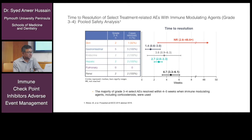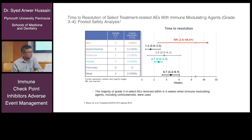Looking at the time to resolution of select treatment-related adverse events with immune-modulating agents: skin toxicity can range from 2.6 weeks up to 48 weeks. Gastrointestinal toxicity resolves in approximately 1.4 weeks, endocrine in 3.6 weeks, and hepatic in 2.7 weeks for grade 3 to 4 events.